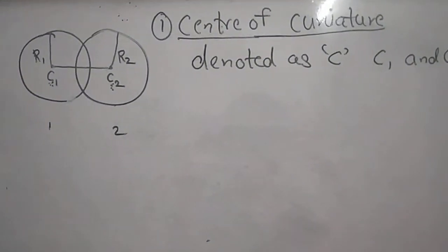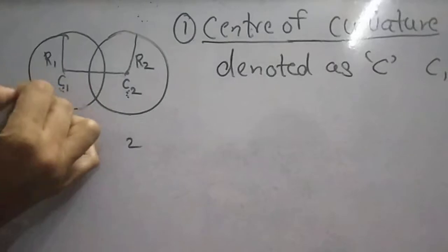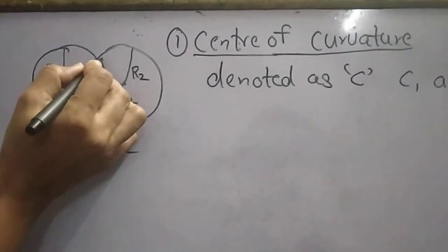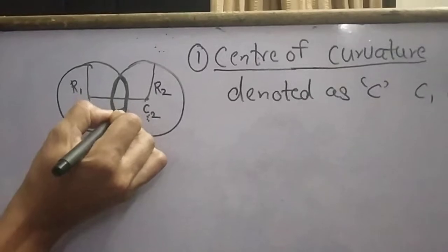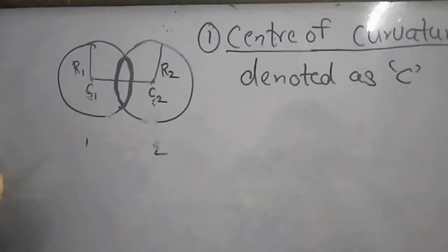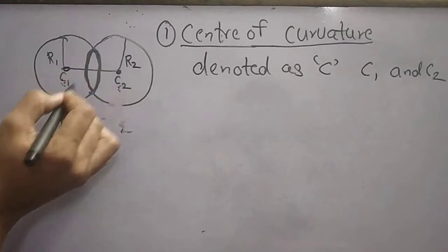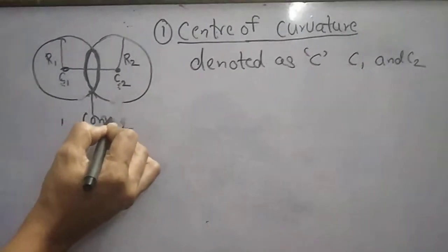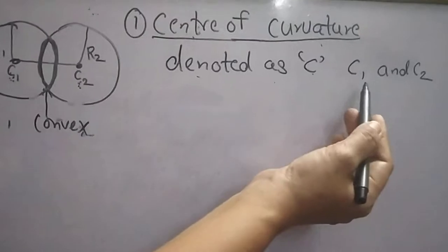The center of curvature is defined as the center of the sphere whose part forms the surface of the lens. C1 is the center of the sphere that forms one surface of this convex lens, and C2 is the center of the sphere that forms the other surface. This is known as the center of curvature, denoted as capital C, that is C1 and C2.